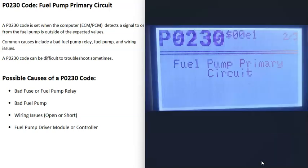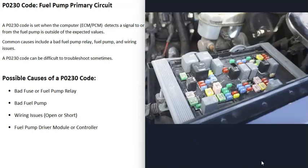One thing to note about a P0230 code is that it can sometimes be difficult to troubleshoot. Sometimes it can be something easy, but quite often it can get into the wiring and different things like that, which can make it kind of difficult to troubleshoot, so keep that in mind.